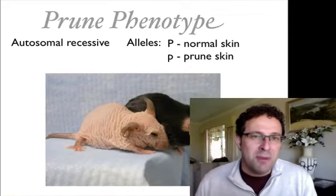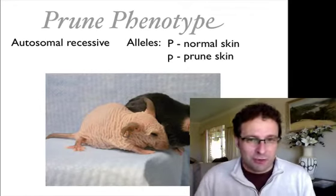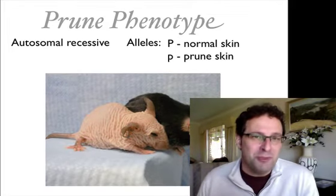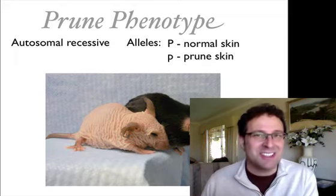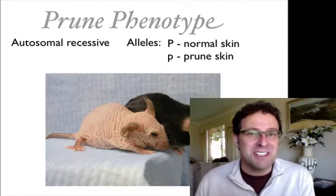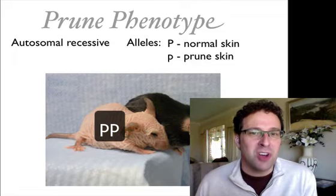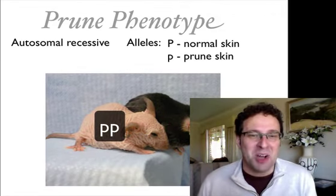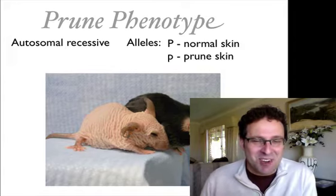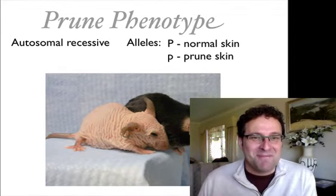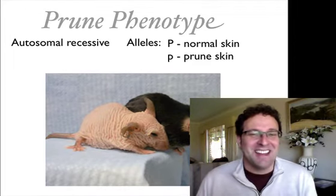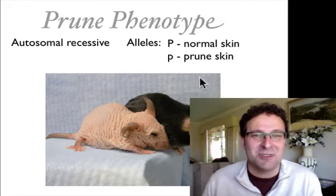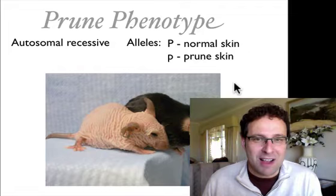Another phenotype is on a separate chromosome. The grasshopper phenotype is on chromosome 14; the prune phenotype is on chromosome 19 — a separate chromosome. Again it's an autosomal recessive phenotype; you would have to be homozygous recessive, little p little p, in order to have the prune phenotype. They've got sort of wrinkly skin and no hair. The prune phenotype is not linked — it's independently assorted from the grasshopper phenotype.